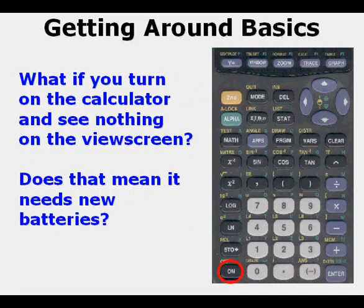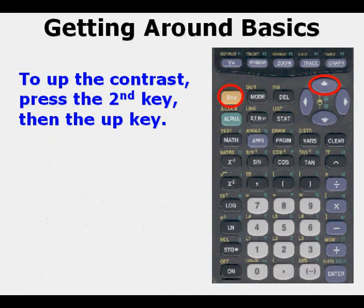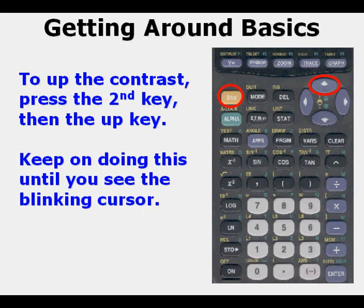What if you turn on your calculator and see nothing in the view screen? Does that mean it needs new batteries? Well, turn the calculator over and make sure that you have the four batteries there. It just might look like it's off because the contrast turned low. You can up the contrast by pressing 2nd then the up arrow key and do that repeatedly until you see the blinking cursor in the upper left hand corner.